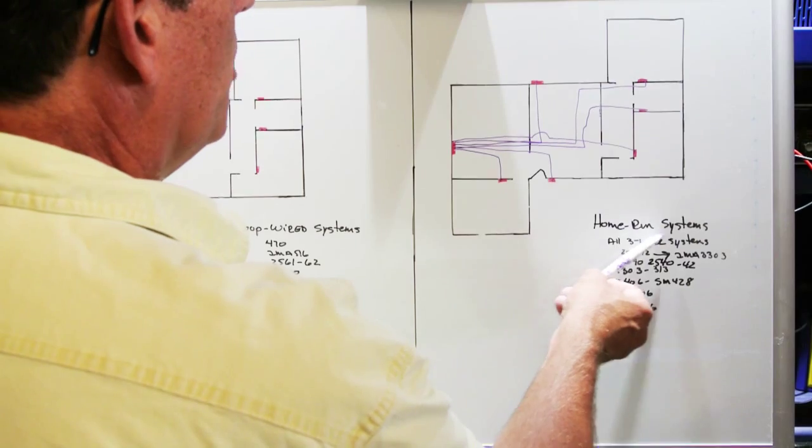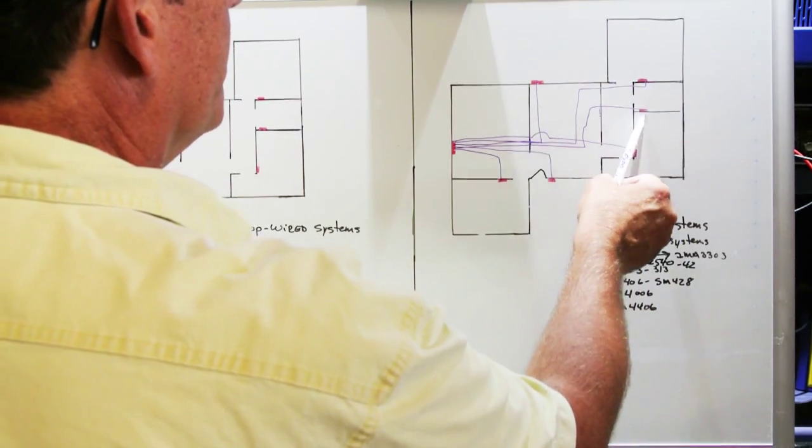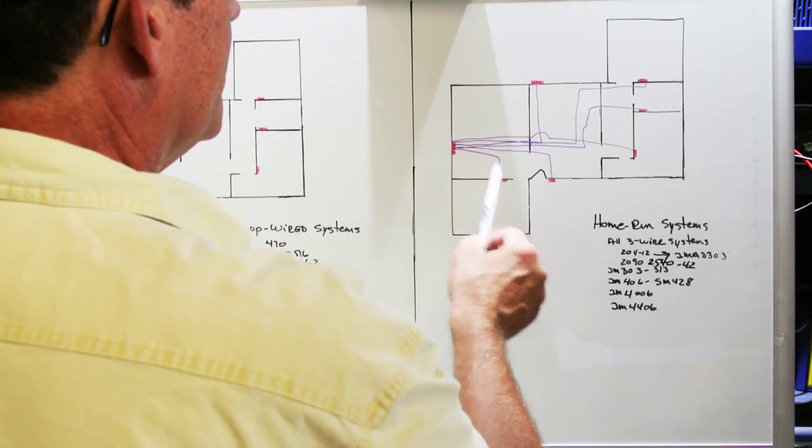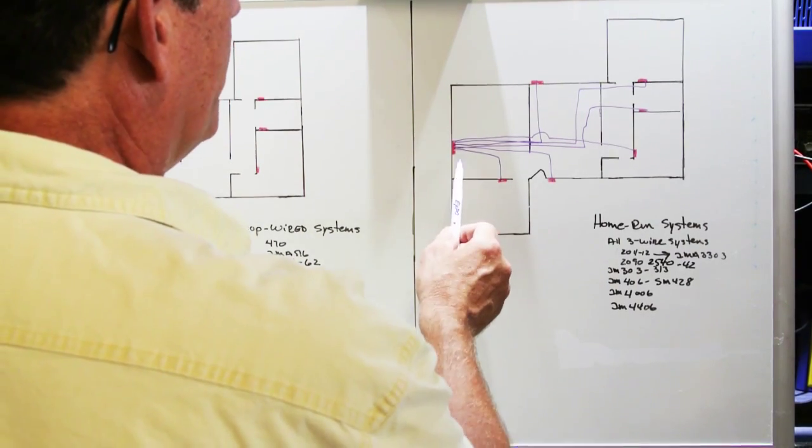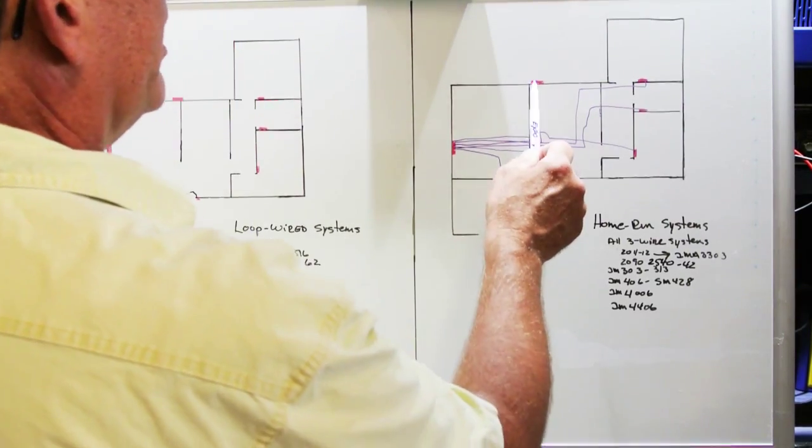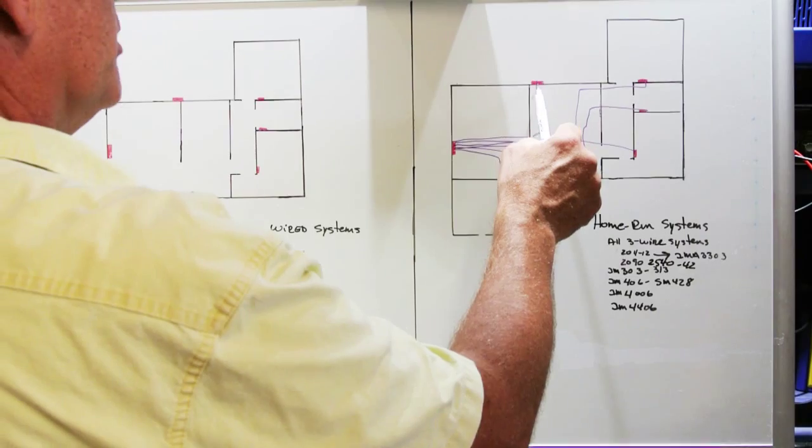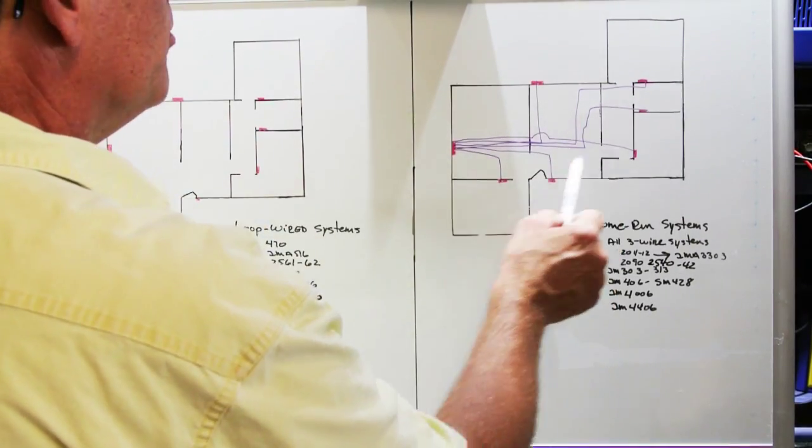What you'll see in home run systems is that if you have one, two, three, four, five, six remote stations, back at the master station, when you open it up, you're going to have six individual cables because the cable runs home from each station. So that's a home run system.